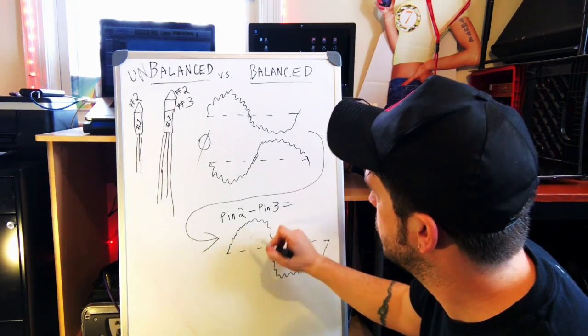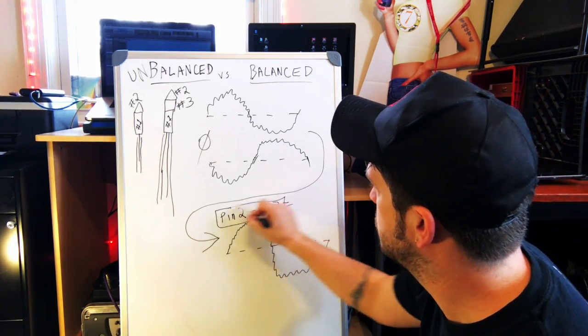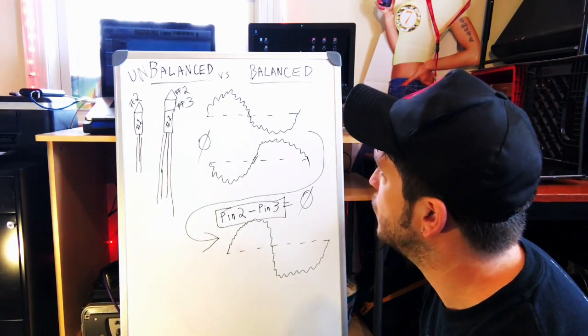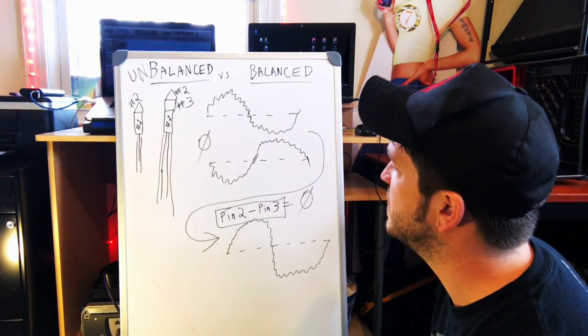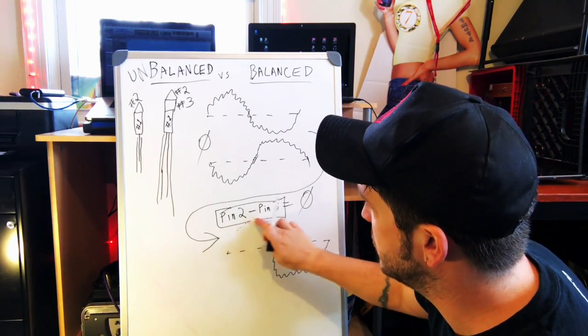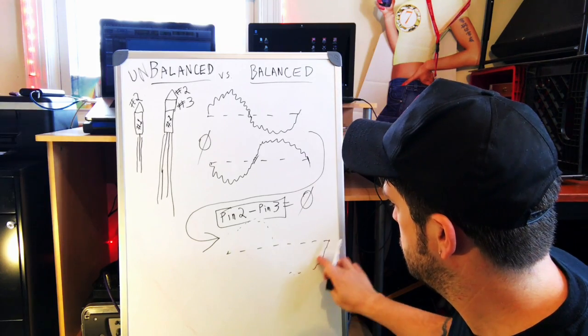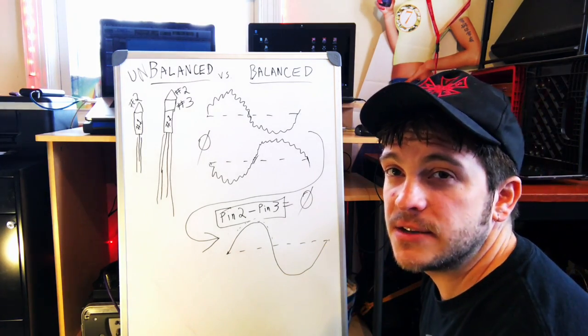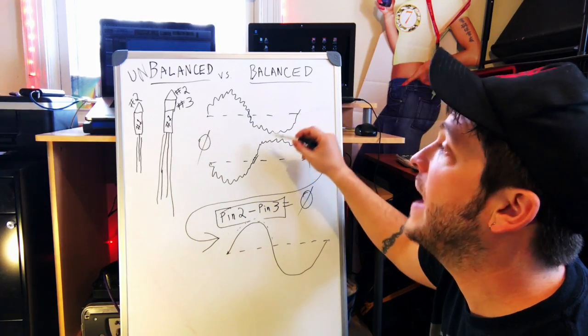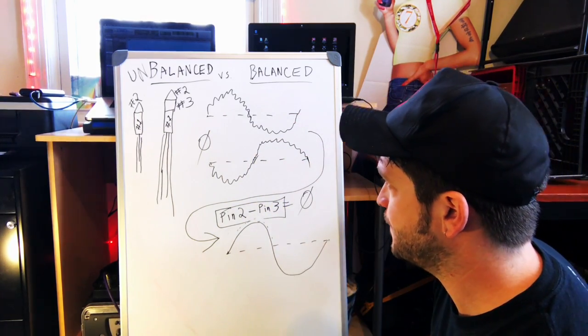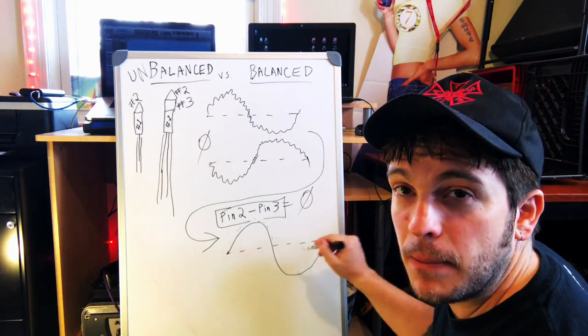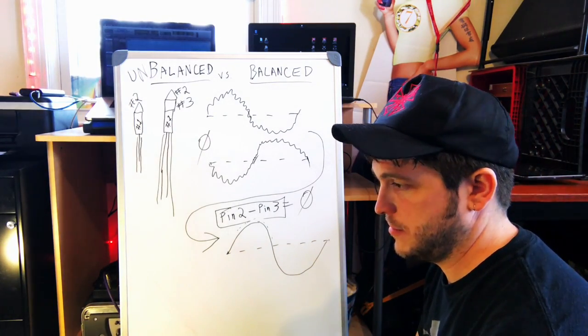And then, here, when this happens, the phase flip, that noise is going to cancel out. The noise on pin three is going to cancel out the noise on pin two. And instead of getting this, noise plus signal, the noise is canceled out, the signal is additively summed together, and you get your signal minus the noise. That's how it works.